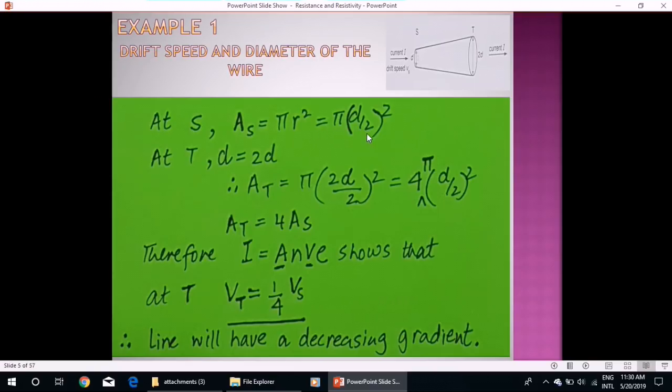Which will be equal to pi d by 2 square, because d is equal to 2 times of r, or r is equal to d by 2. At point T, as diameter will be doubled, so we substitute 2 times d and we get area at T will be equal to 4 times area at S.